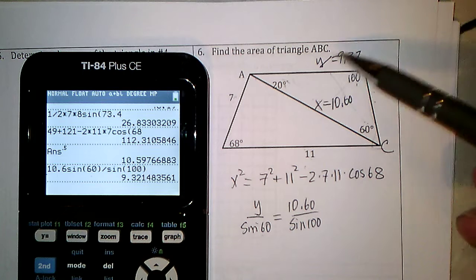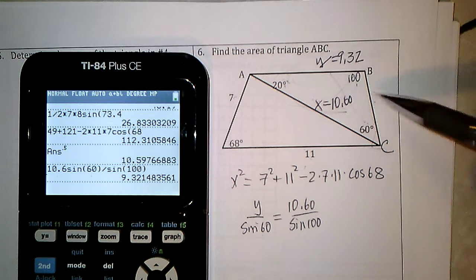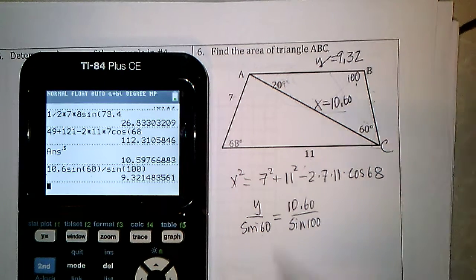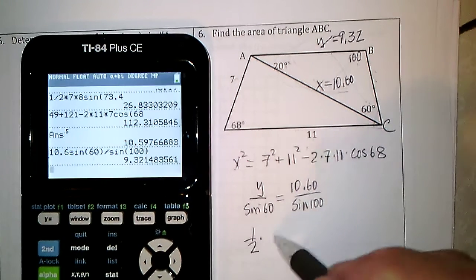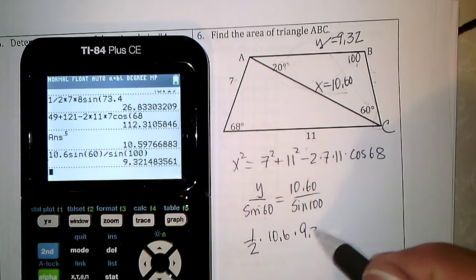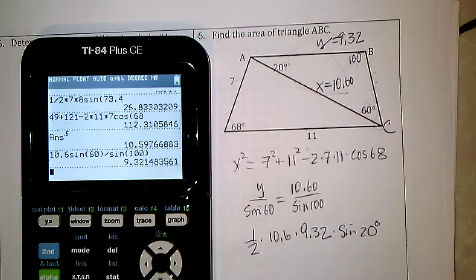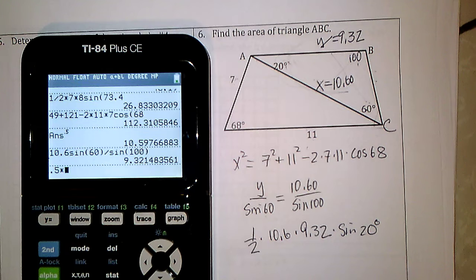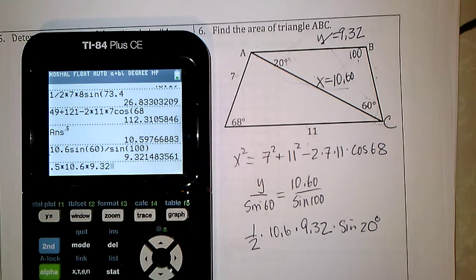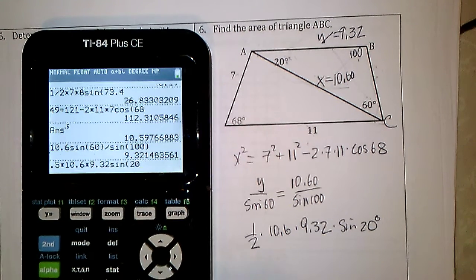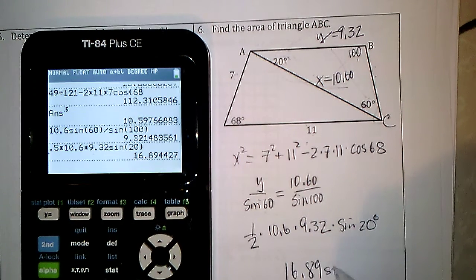Now I have side-angle-side going this way and can find the area. The area equals (1/2) × 10.6 × 9.32 × sine(20°). Computing one half times 10.6 times 9.32 times sine(20), I get 16.89 square units.